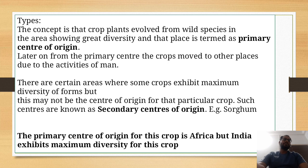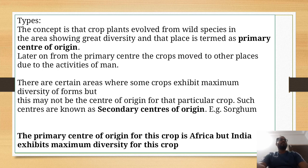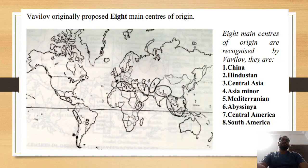For example, Africa was the maximum crop origin area, but now in India there are some crops with the highest genetic diversity. So India would be the secondary center of origin and Africa is the primary center of origin. Vavilov gave 8 centers of origin.